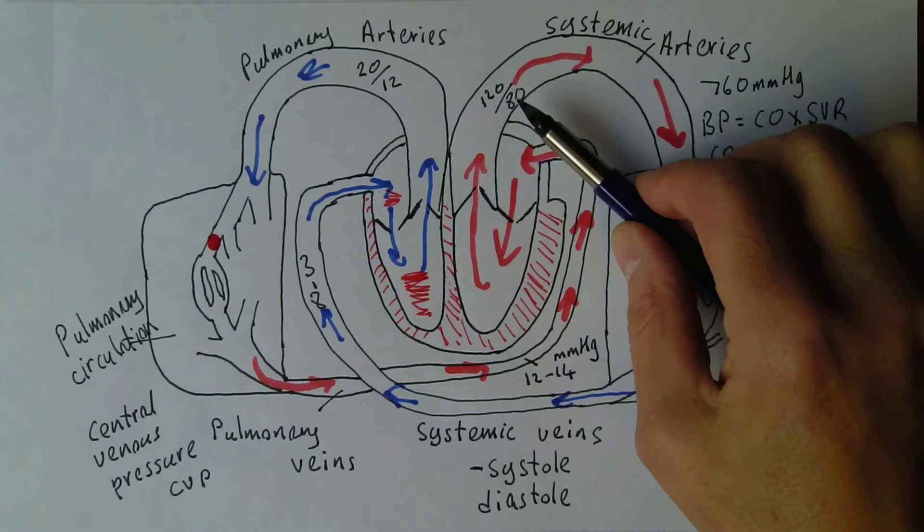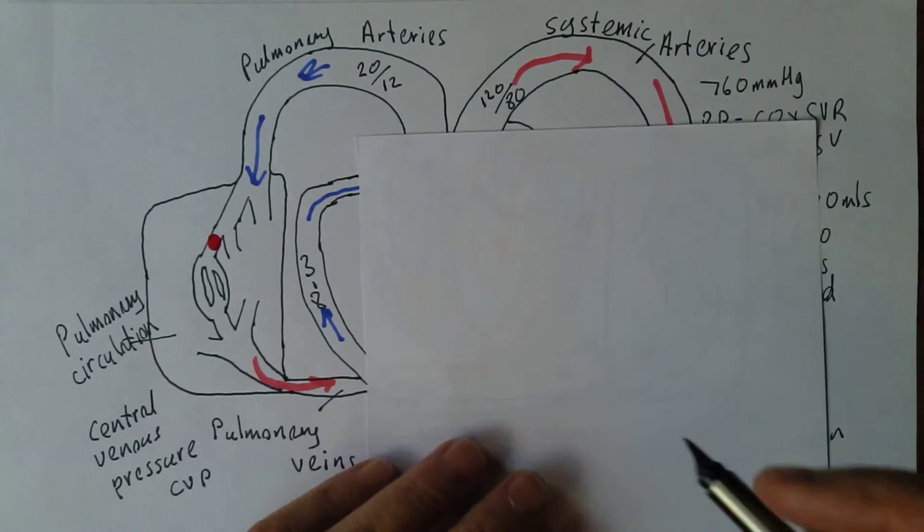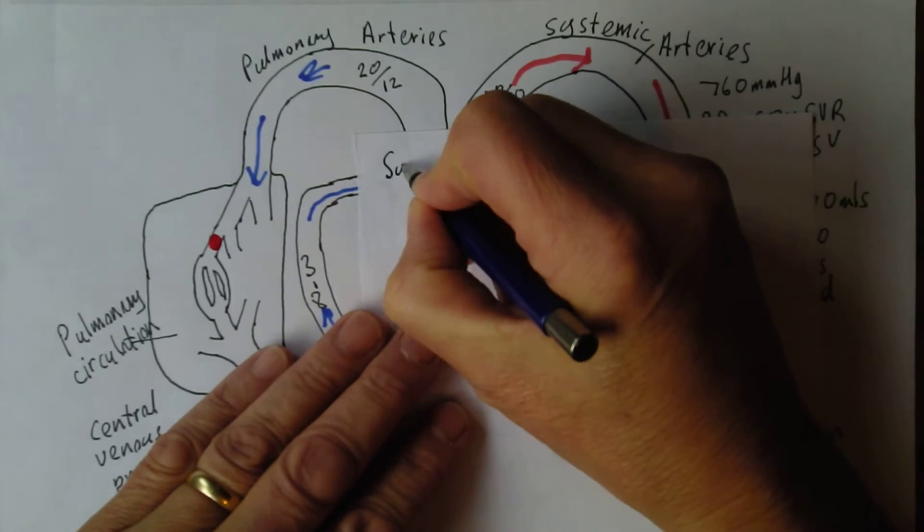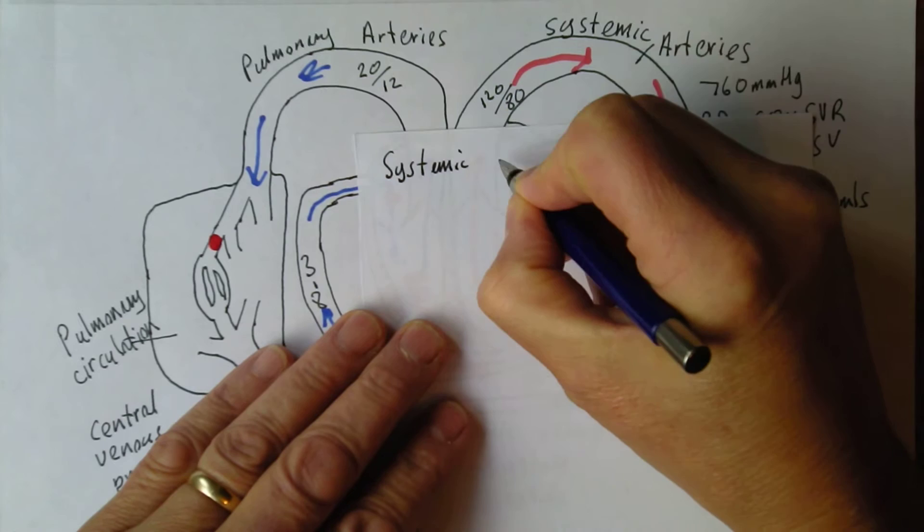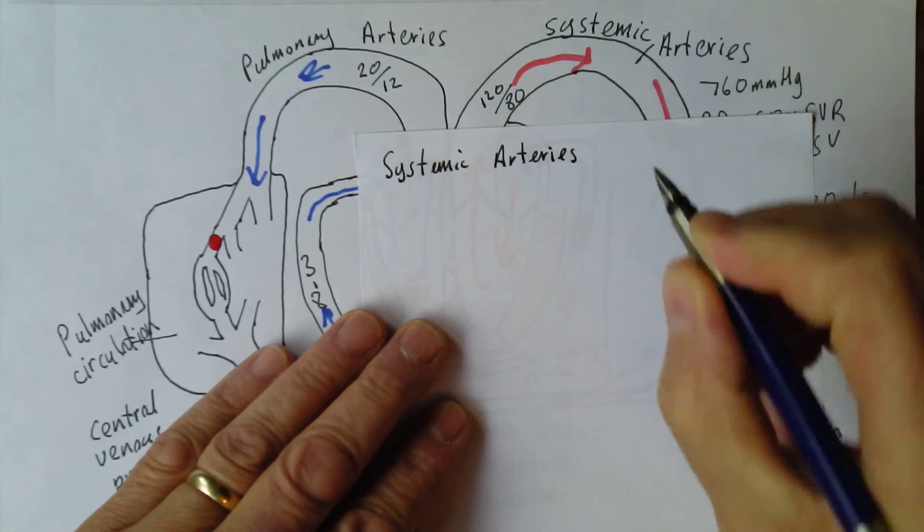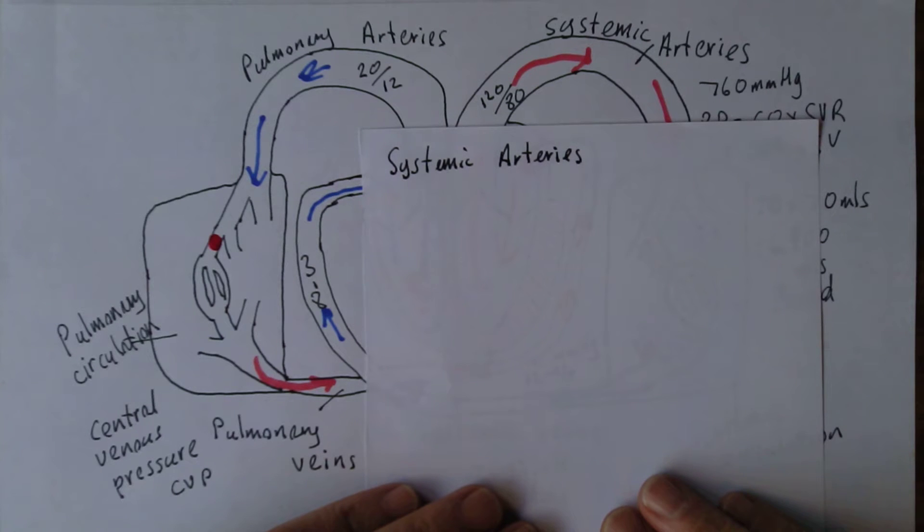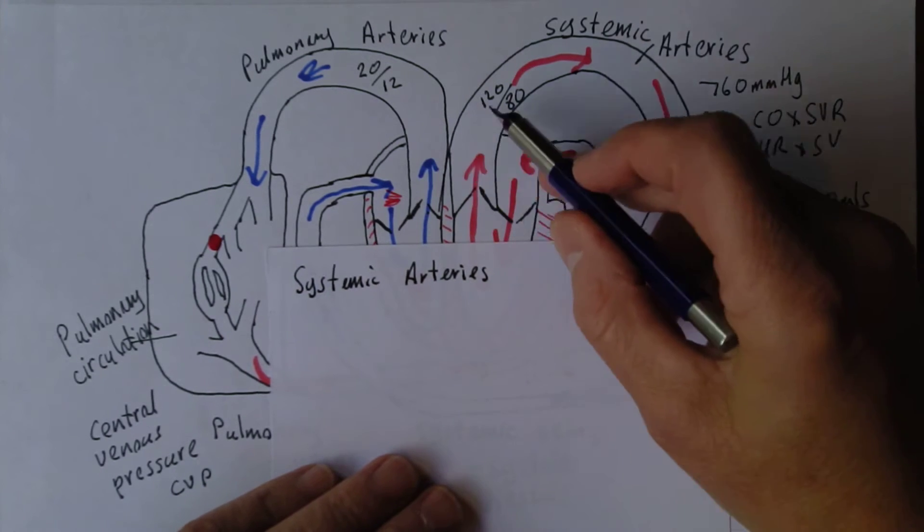That might be a blood pressure that you typically find. If you're young and fit your blood pressure may be quite a bit lower than that. That's acceptable. In fact it's good. So we're thinking about systemic arteries. These are the arteries that break down and take blood to all of the body apart from the lungs.